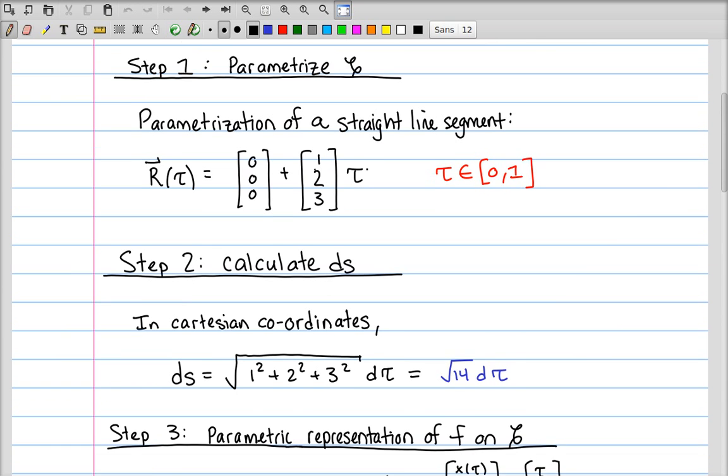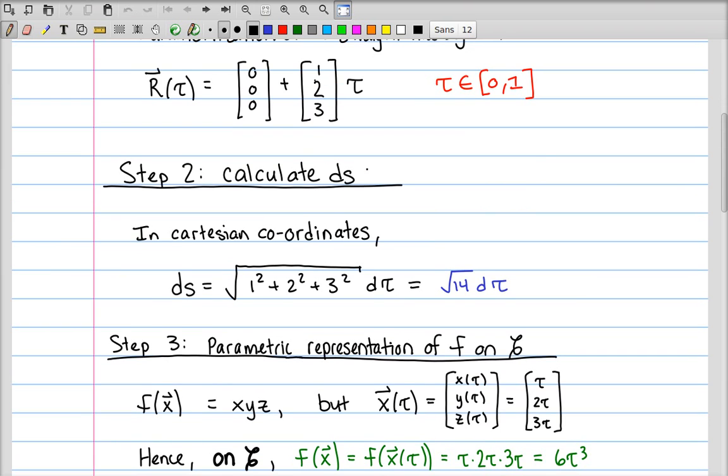The second step is to calculate the length element ds. In Cartesian coordinates, that's given as the square root of, or rather, it's the magnitude of r prime of tau in any coordinate system. In Cartesian coordinates, that's the square root of the time derivatives here, 1, 2, and 3. So we get the square root of 1 squared plus 2 squared plus 3 squared for the square root of 14 d tau.